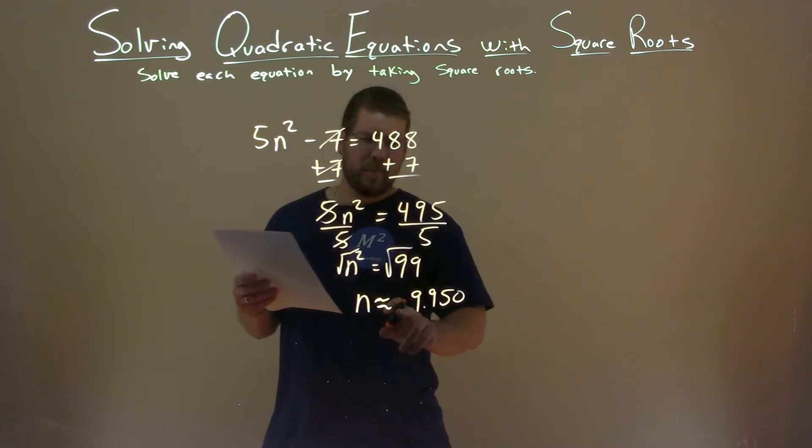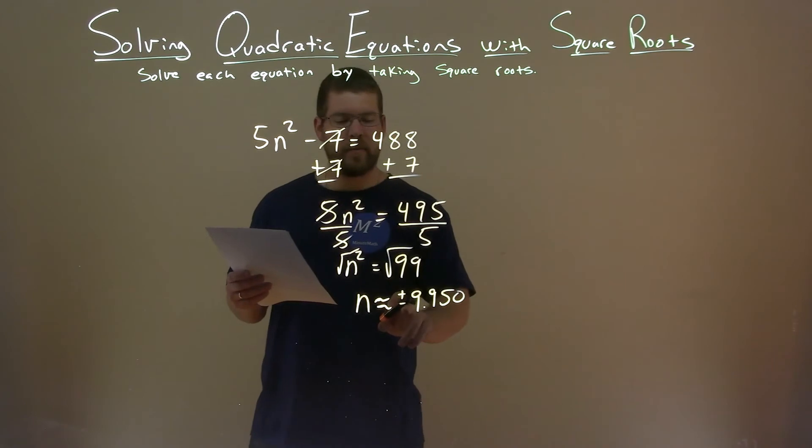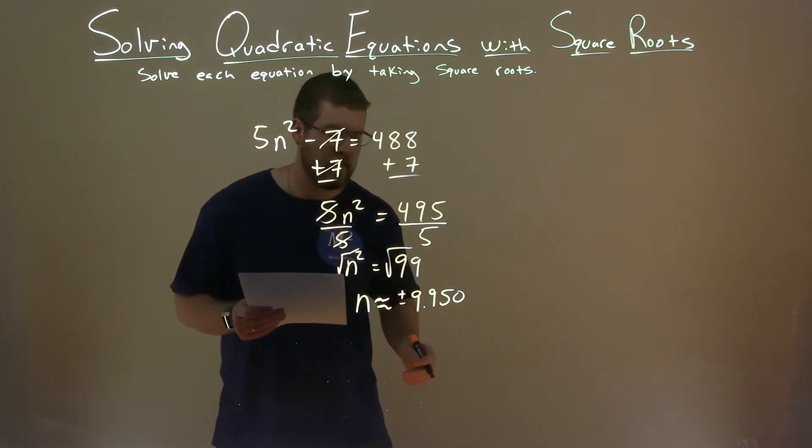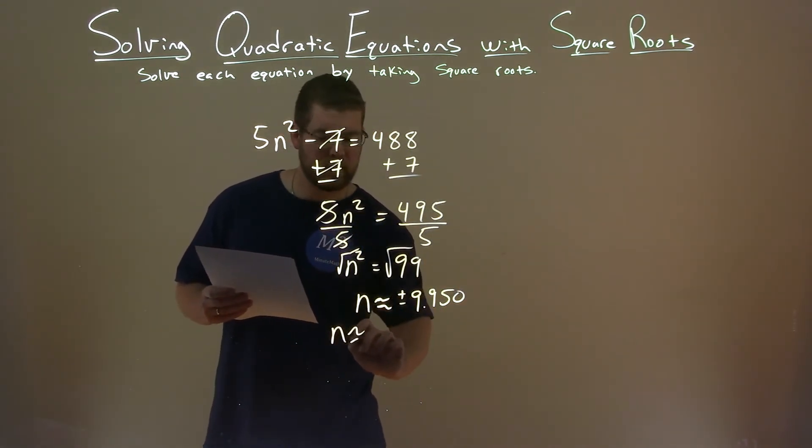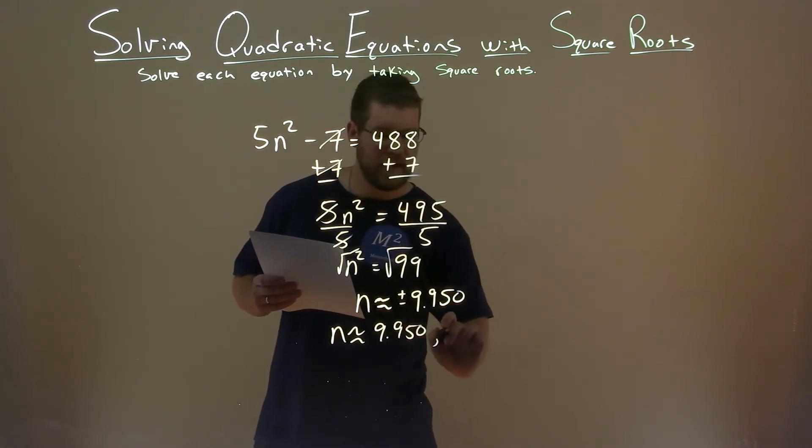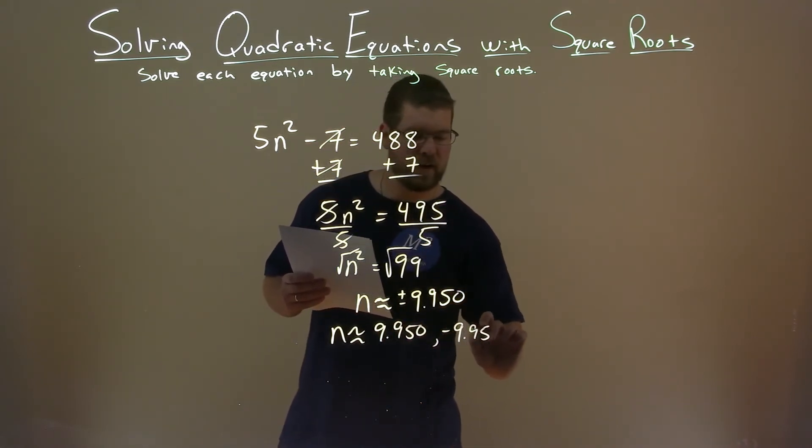Well, that's also a positive and negative. Why? When we take the square root over an equal sign, we need to make sure there's a positive and negative on the right-hand side. So, that's saying n is approximately a positive 9.950 and a negative 9.950.